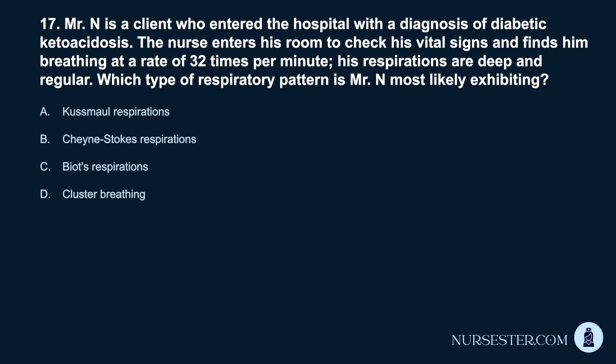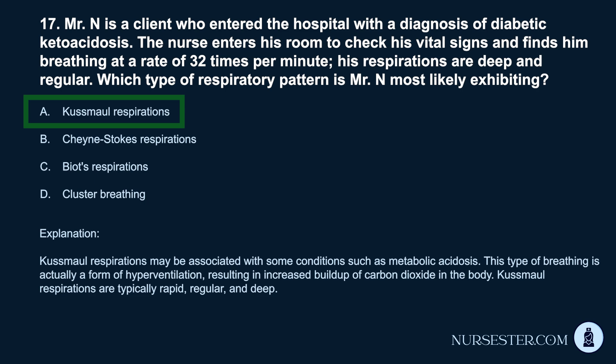Question 17. Mr. N is a client who entered the hospital with a diagnosis of diabetic ketoacidosis. The nurse enters his room to check his vital signs and finds him breathing at a rate of 32 times per minute; his respirations are deep and regular. Which type of respiratory pattern is Mr. N most likely exhibiting? a. Kussmaul respirations. b. Cheyne-Stokes respirations. c. Biot's respirations. d. Cluster breathing. Correct answer: a. Kussmaul respirations. Kussmaul respirations may be associated with conditions such as metabolic acidosis. This type of breathing is a form of hyperventilation resulting in increased buildup of carbon dioxide in the body. Kussmaul respirations are typically rapid, regular, and deep.